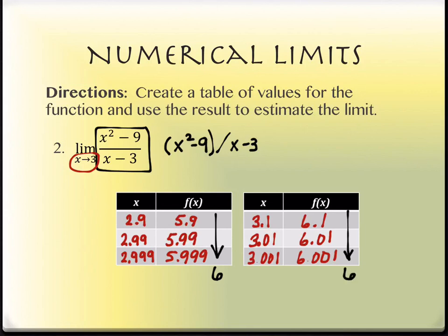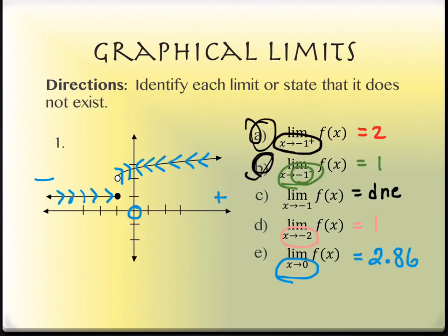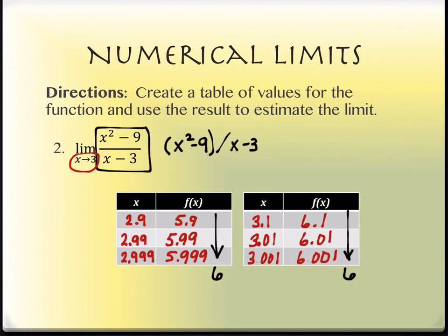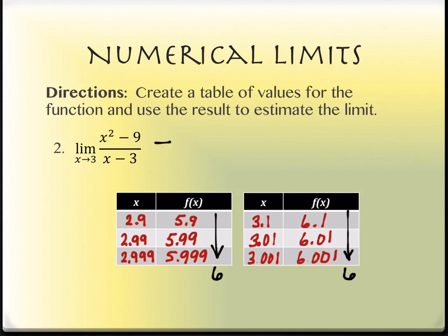That's a good thing. If it's getting close to the same value, that's equivalent to looking at this picture and tracing toward the same y value from both sides. We would say then that this one has a limit, and we numerically approximated it to be 6.